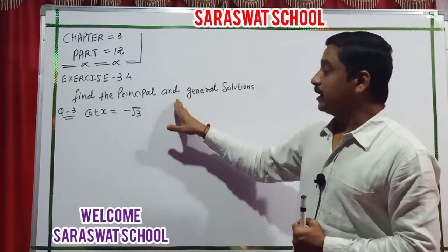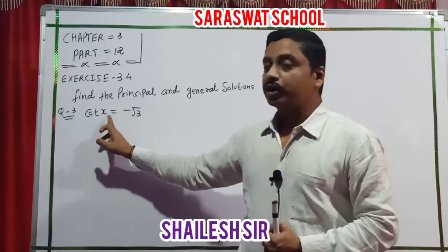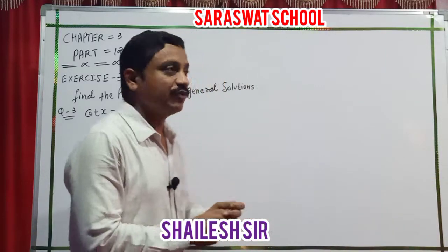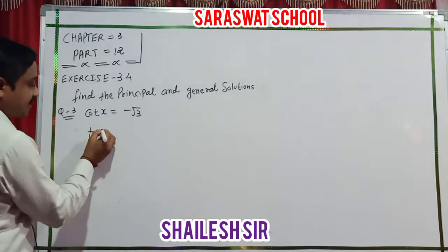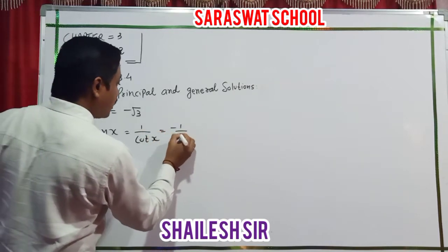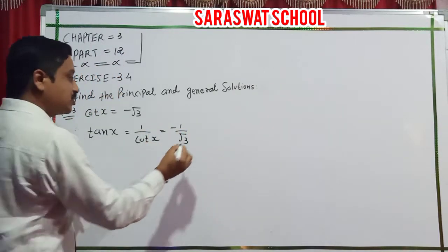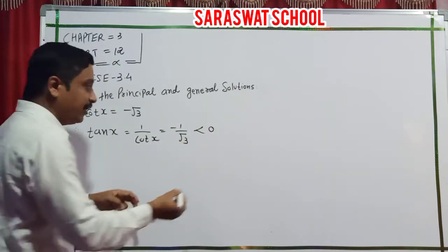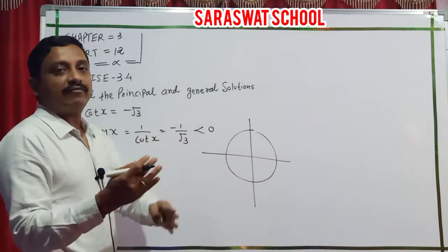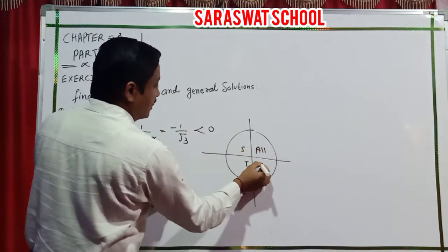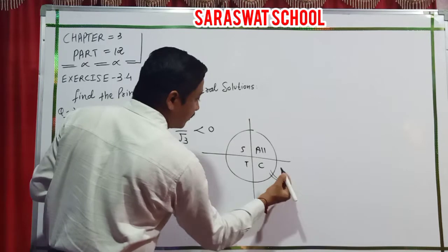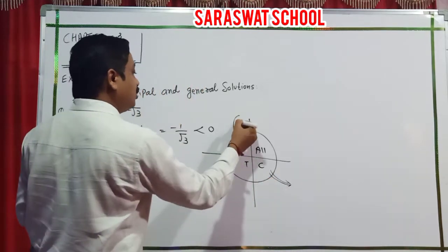Find the principal and general solutions of cot x equal to minus root 3. I convert cot x into tan x first. Cot is the reciprocal of tan, so tan x equals minus 1 by root 3. Now cot and tan are negative in the second and fourth quadrants.